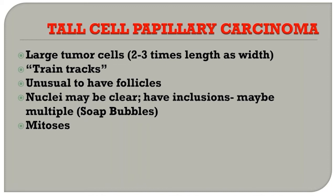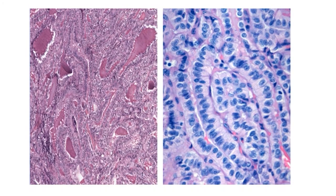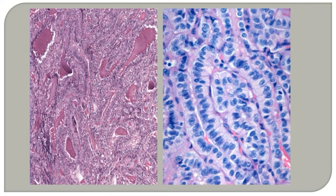They can also have mitotic activity. Here are two different cases of tall cell variant papillary carcinoma. On the left, you see some colloid, but notice that the cells are quite voluminous in their cytoplasm. On the right, you see the train track growth of the tall cell variant. Notice that the individual cells are rather narrow but have a lot of cytoplasm. Most pathologists feel that the cells should be at least three times as long as they are wide.